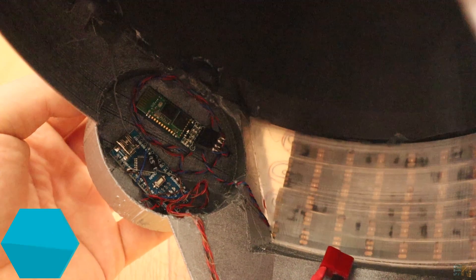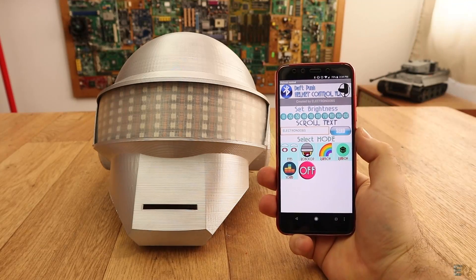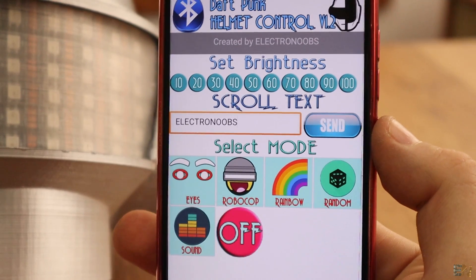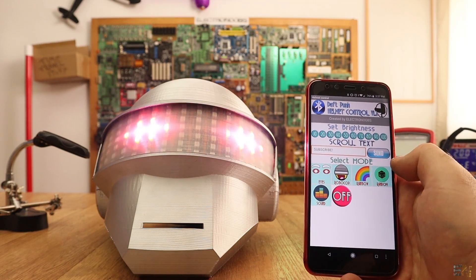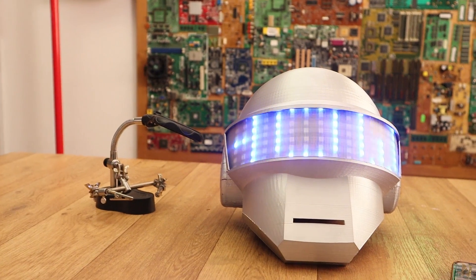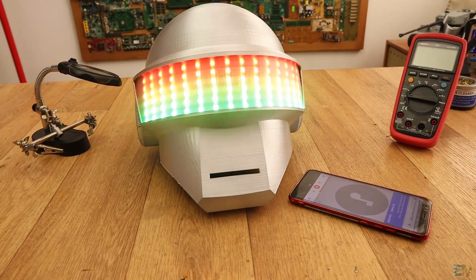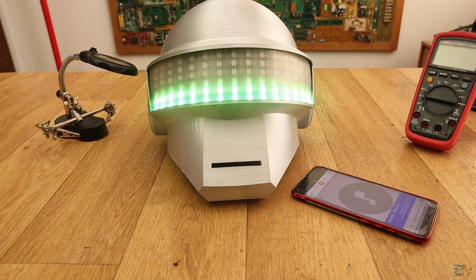The helmet also has a Bluetooth module. I've created a simple app in App Inventor that will send some short commands and change the mode of the display or send text to be displayed on the visor. The helmet also has a voice control mode where the LEDs are flashing according to the audio amplitude.